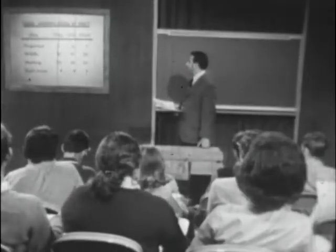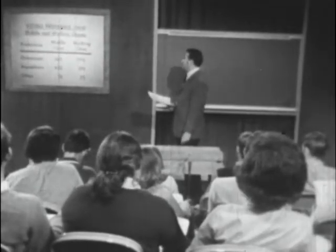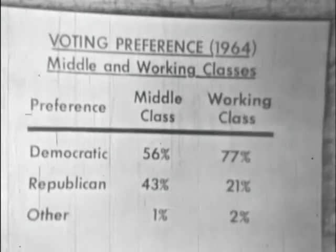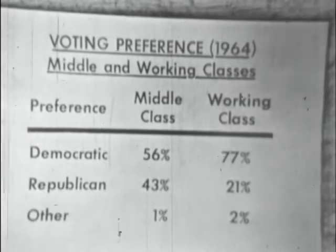The first table shows you the percentage of votes by groups in presidential elections from 1952 to 1964. The second table concerns the relationship between social class and political party choice. And the third table also tells us something about voting choice, political party preference, and socioeconomic status.